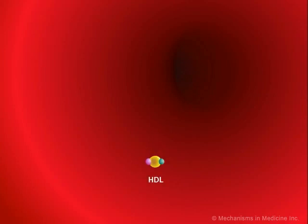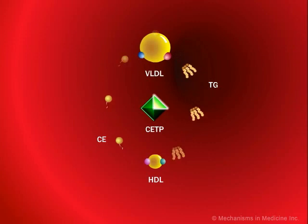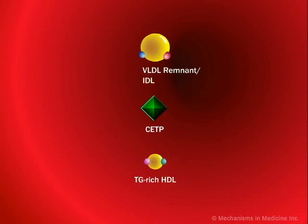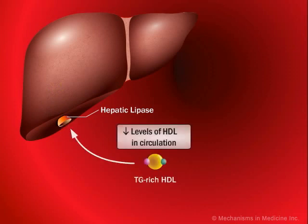In diabetes, high-density lipoprotein HDL levels are also reduced. HDL particles exchange cholesterol esters for triglycerides of ApoB-containing lipoproteins through the action of cholesterol ester transfer protein. This results in the formation of triglyceride-enriched HDL particles. Once circulated to the liver, these particles are more likely to enter hepatocytes, become acted upon by hepatic lipase, and thus be removed from general circulation. This increased clearance leads to reduced levels of circulating HDL cholesterol.